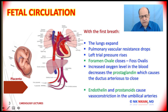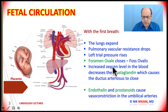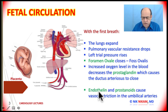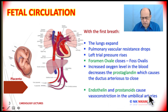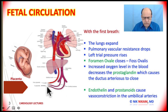A couple of important terms to remember — these could be potential board exam questions: endothelin and prostanoids cause vasoconstriction in the umbilical arteries, which eventually fade away.